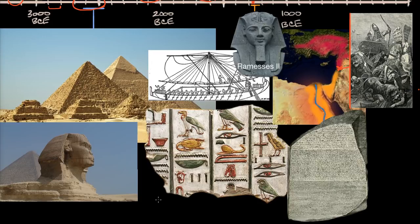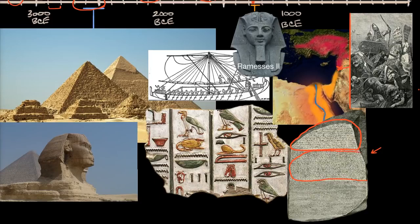We didn't have a good understanding until we discovered the Rosetta Stone, found in 1799. It's so valuable because it has the same text written in three languages: ancient Egyptian hieroglyphs, a later Egyptian script called Demotic Egyptian, and most importantly, Greek. Historians were then able to decipher what the symbols mean, since they had a translation. Hieroglyphics are one of the first forms of writing.